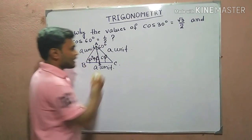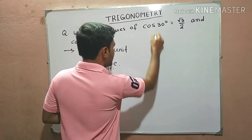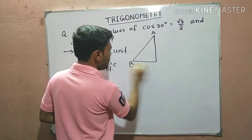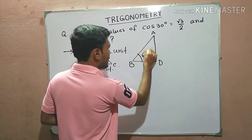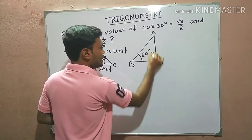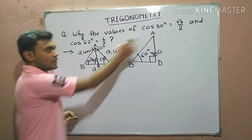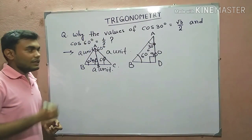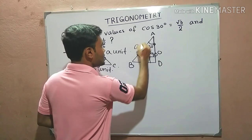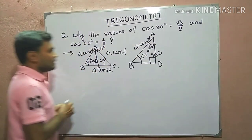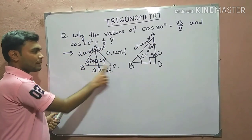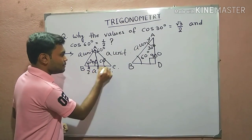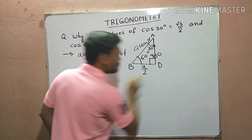In this right angle triangle we are labeling the vertices A, B, and D. The angle at B is 60 degrees and the angle at D is 90 degrees, so obviously this angle at A would be 30 degrees. We know AB is a unit, and since the perpendicular bisects the base BC of the equilateral triangle, BD would be a by 2.